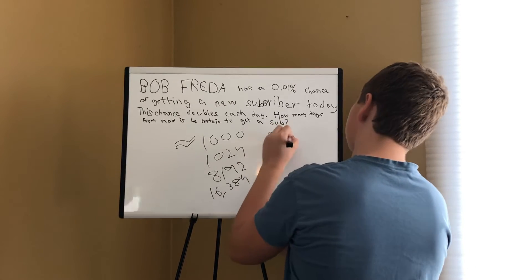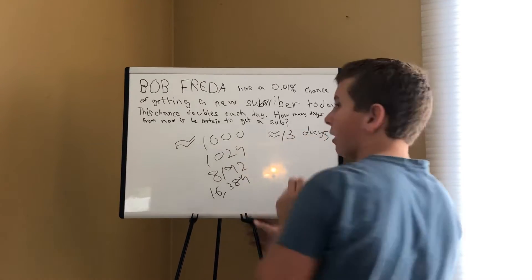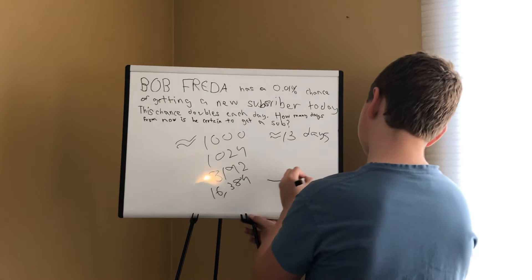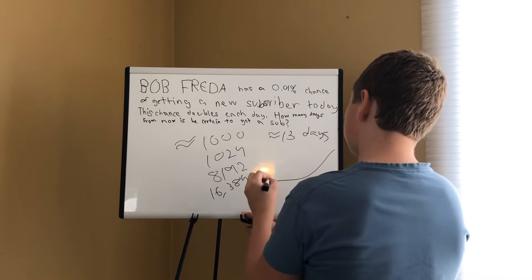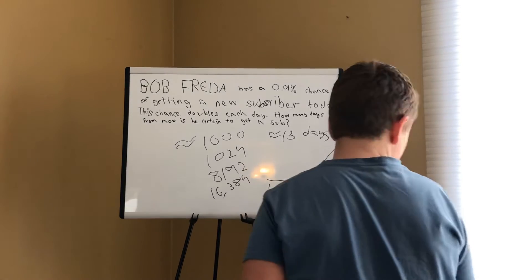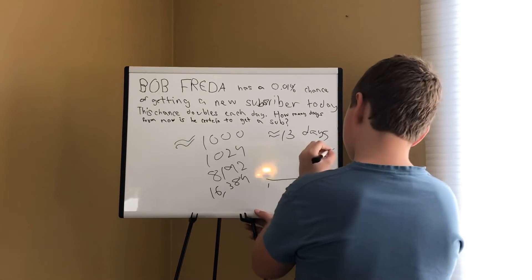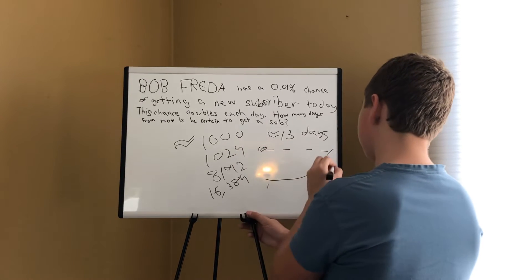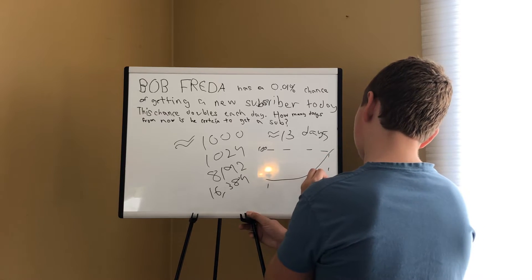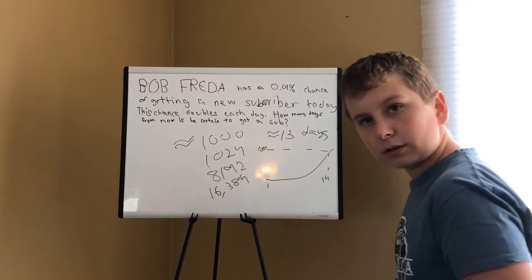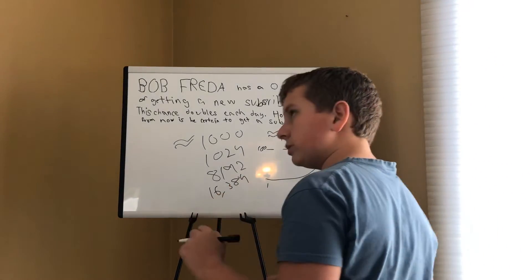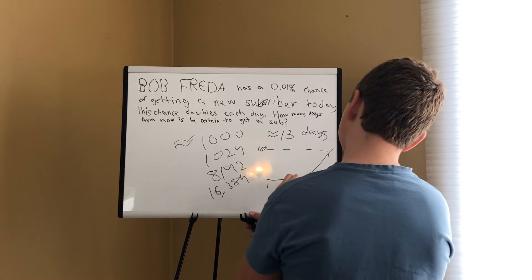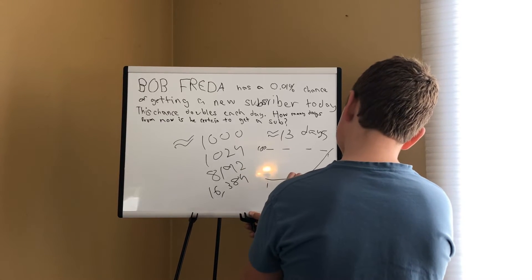We have 13 days. Now, what are we actually modeling here? We're modeling a function that looks like a curve — right now we're at day 1, and 100% happens on day 14. In fact, what we're doing is something along the lines of the curve y equals 2 raised to the x.